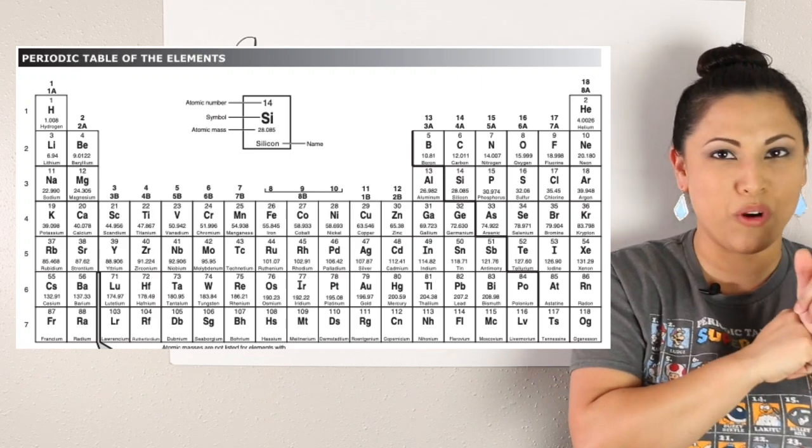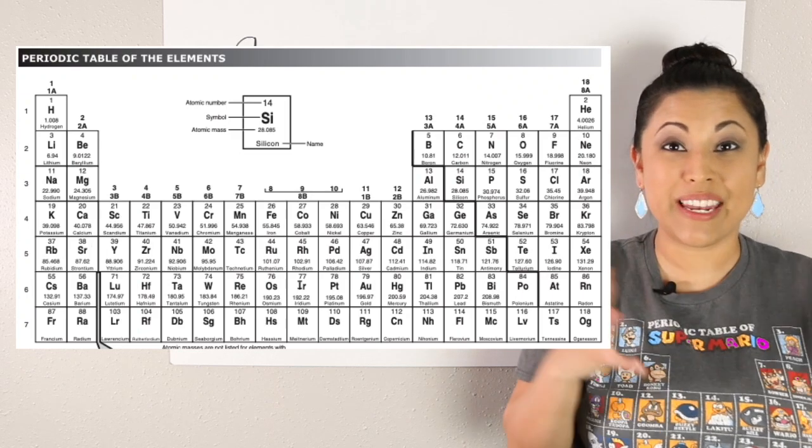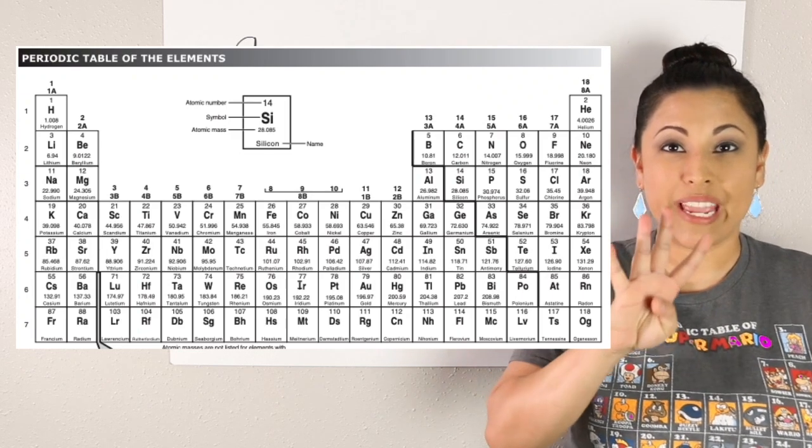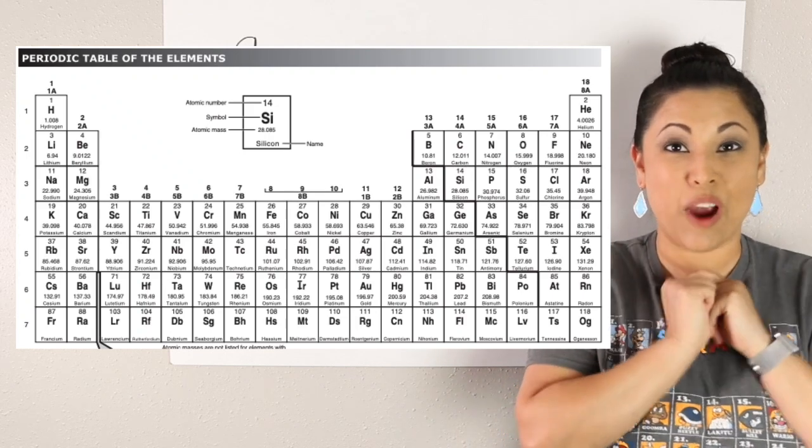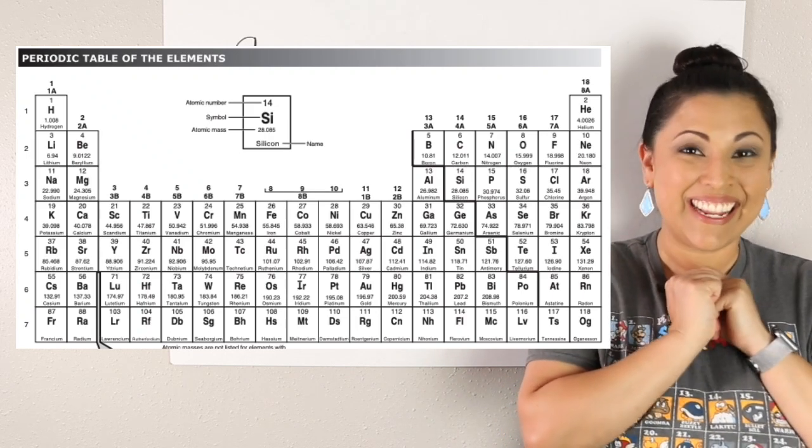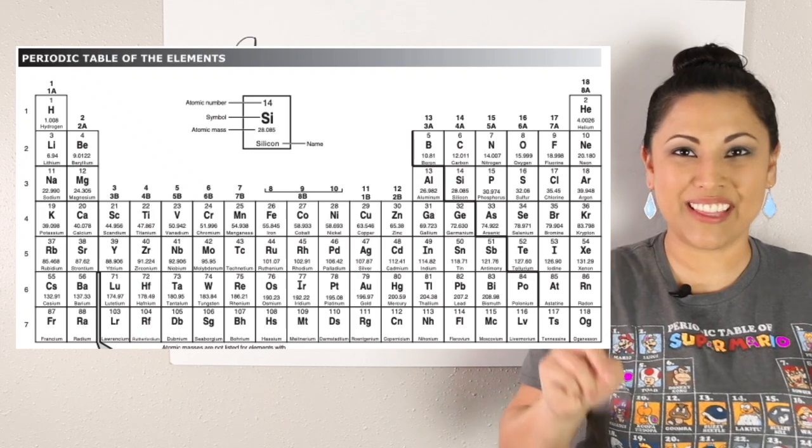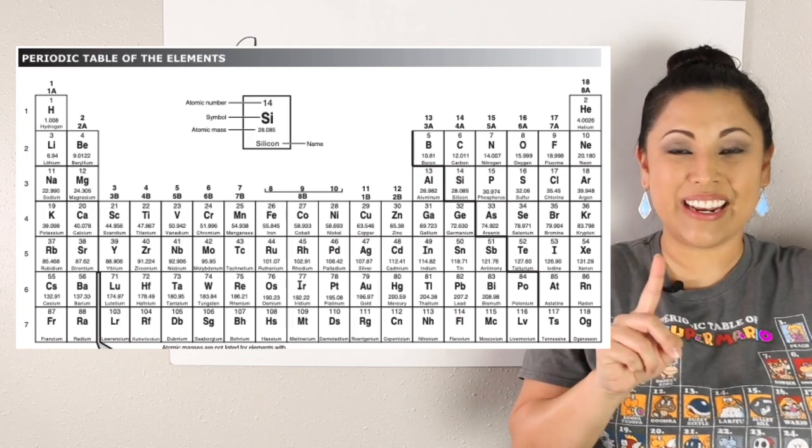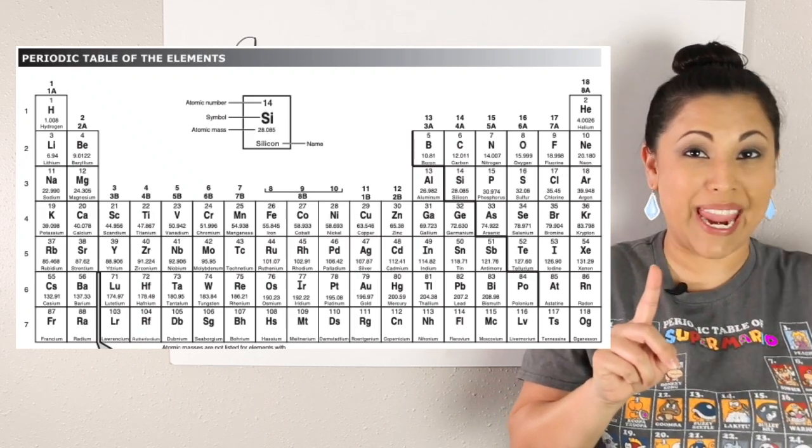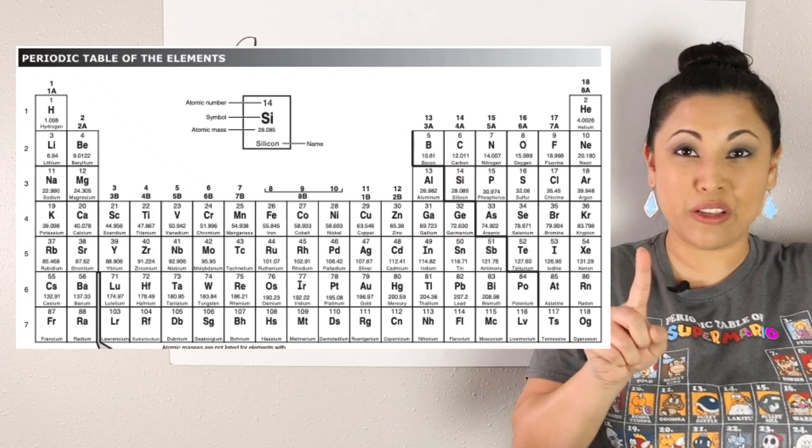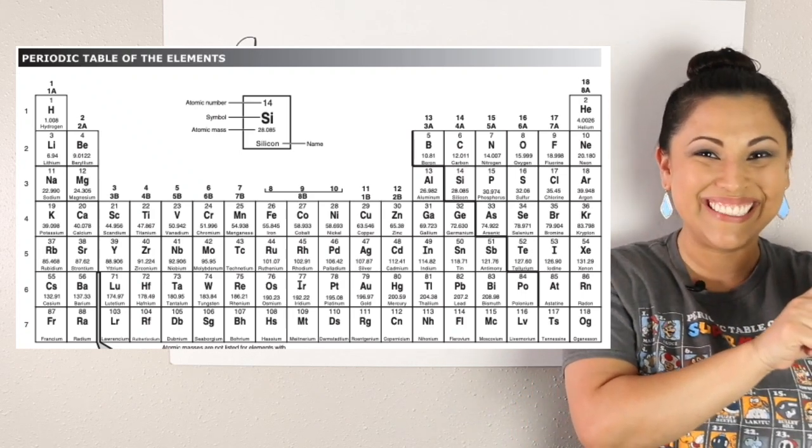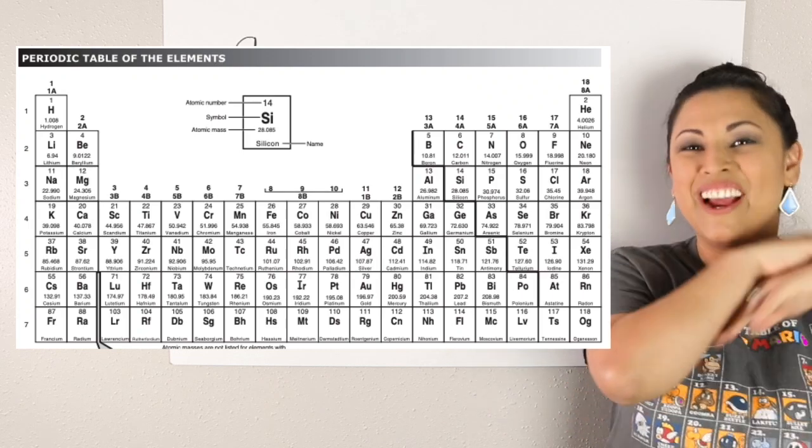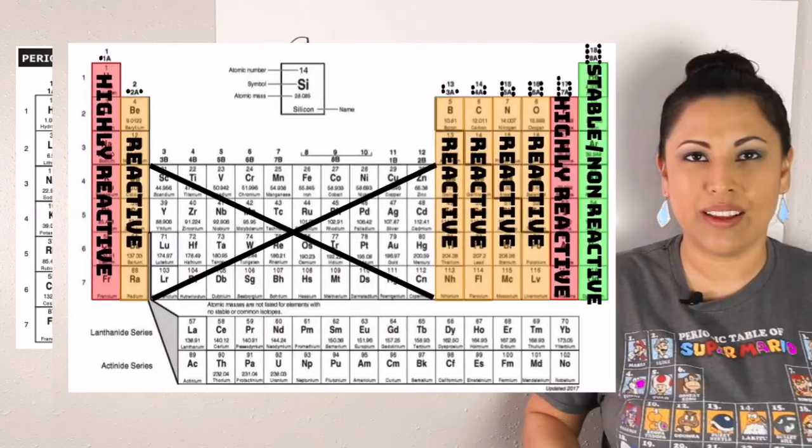Let's take a look at one more. The next one is four energy levels and eight valence electrons. How are we going to find it? Period four on the side, and eight valence electrons is group 18. Again, find those two numbers. Go to that element. What element is it? Krypton! Good job!